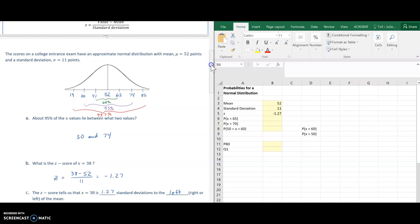So it's parentheses 38 minus, I'll put 38 in there, minus and then I can call the mean right there. Close off those parentheses divided by the standard deviation. And there we get negative 1.27. The z-score tells us that 38 is 1.2 standard deviations from the mean. And because it was negative, it's to the left of the mean.